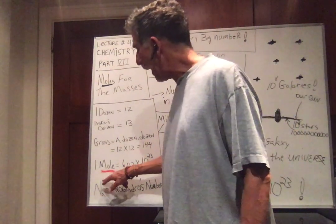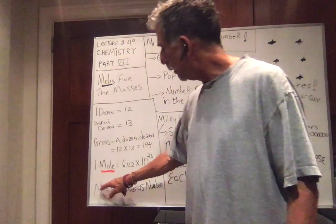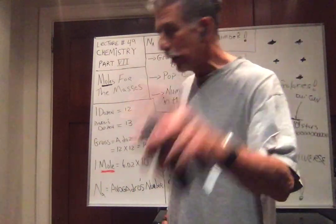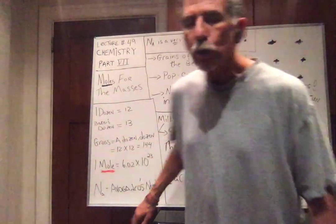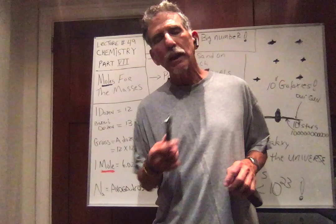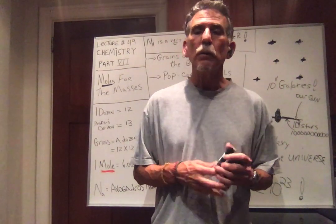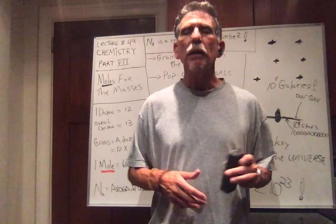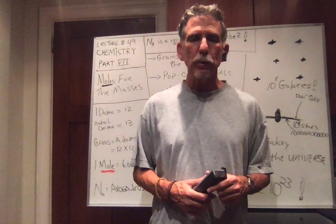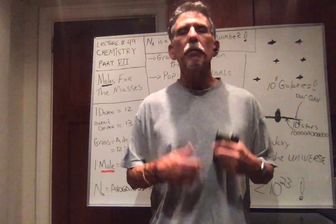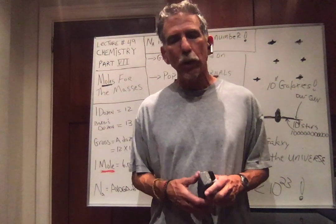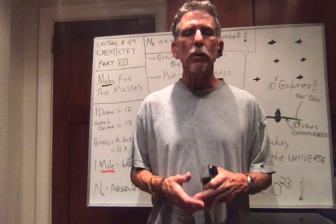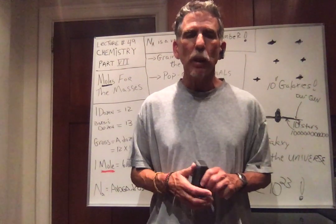N-A, Avogadro's number, is called Avogadro's number. Avogadro's number is one mole. So if I have Avogadro's number of pens, I have 6.02 times 10 to the 23rd pens. If I have Avogadro's number of tables, I have 6.02 times 10 to the 23rd tables. If I have Avogadro's number of hydrogen atoms, I have 6.02 times 10 to the 23rd hydrogen atoms. Same for carbon atoms. So Avogadro's number, or one mole, is 6.02 times 10 to the 23rd.